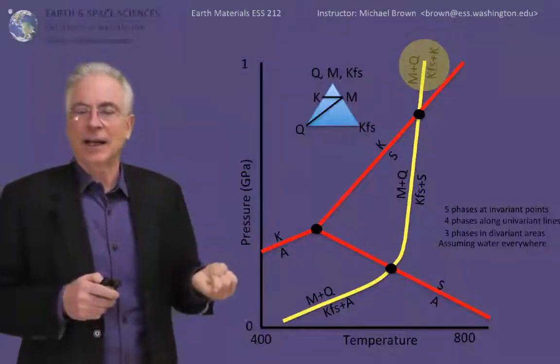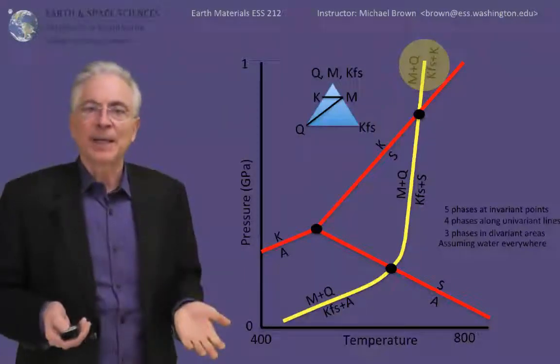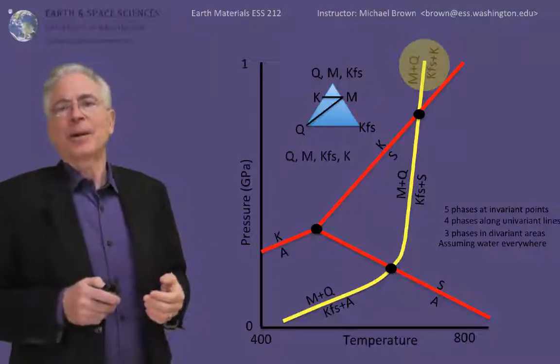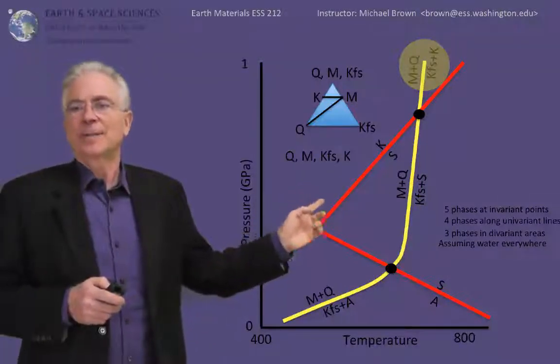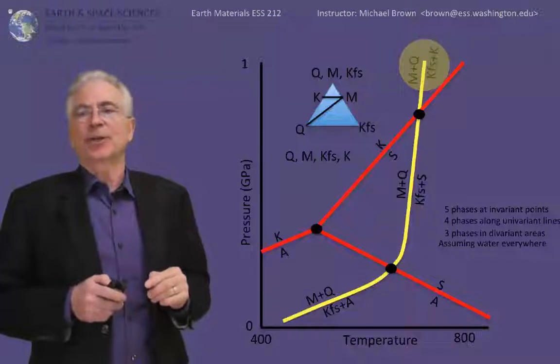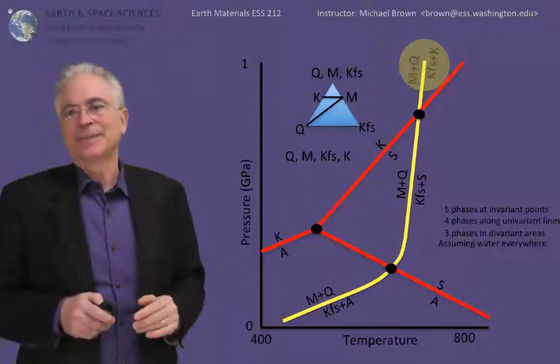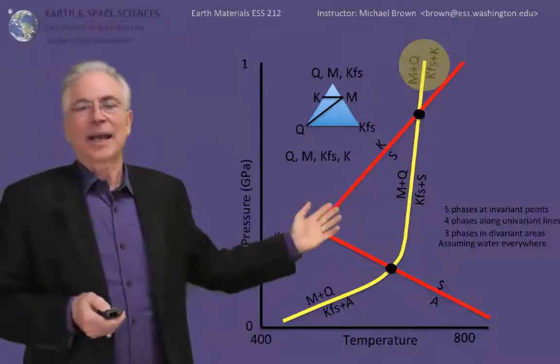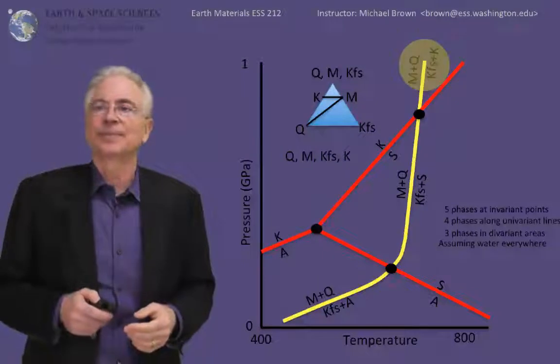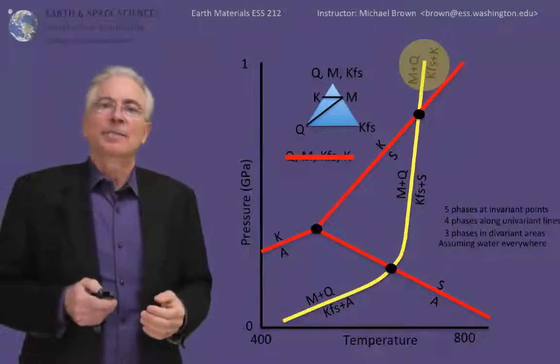They could be quartz, muscovite, and kyanite, or quartz, muscovite, and potassium feldspar. You would have one or the other depending on the bulk composition of the rock. Now we can exclude other combinations. For instance, quartz, muscovite, potassium feldspar, and kyanite would not be an equilibrium assemblage in this pressure-temperature range. It's forbidden by the phase rule. It's four phases instead of three. And you can look at this and say the kyanite and potassium feldspar ought to react with each other to make quartz and muscovite in that range. So we draw a red line through that. That is not an acceptable mineral assemblage.